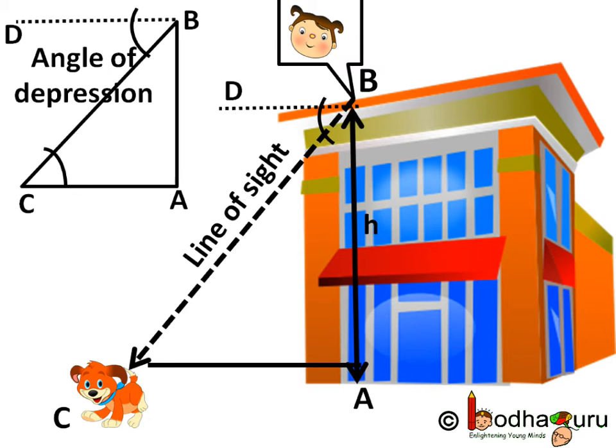Now look carefully. The angle of depression DBC and the angle of elevation ACB, that is if the puppy was looking up, the angle of elevation would be ACB. So angle of depression DBC and angle of elevation ACB are alternate angles.